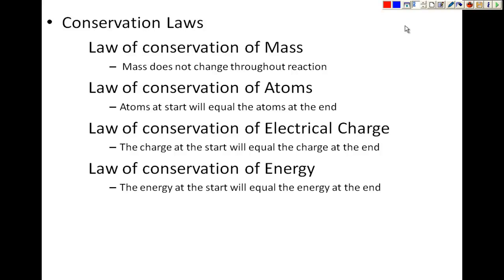Now before we actually start balancing, we have to realize why we are balancing. There are some conservation laws. There's the law of conservation of mass, and what it means is that mass isn't changing throughout the reaction. So if the reactants weigh 25 grams, the products are also going to weigh 25 grams. The mass at the start equals the mass at the end.